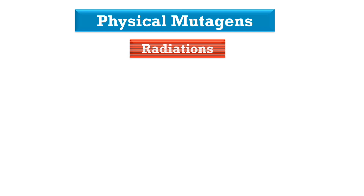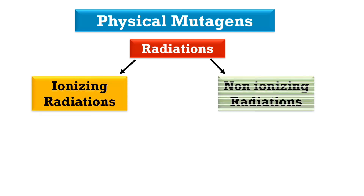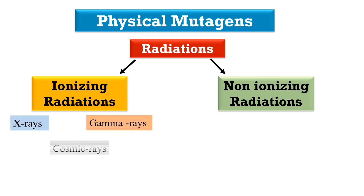First are the physical agents. They include radiations, which are of two types: ionizing radiations and non-ionizing radiations. Ionizing radiations have high penetration power — they can cause breakage in the DNA and also base modifications. Examples of ionizing radiations include X-rays, gamma rays, and cosmic rays.